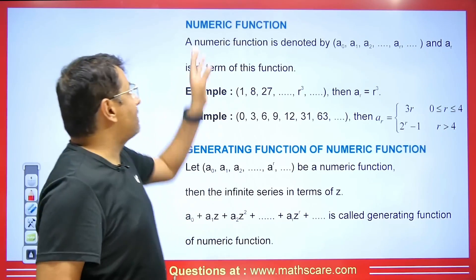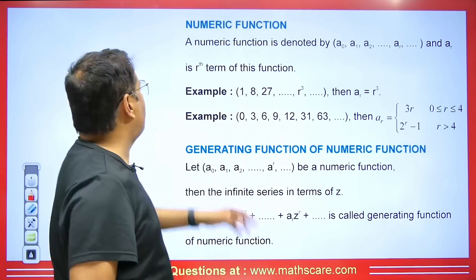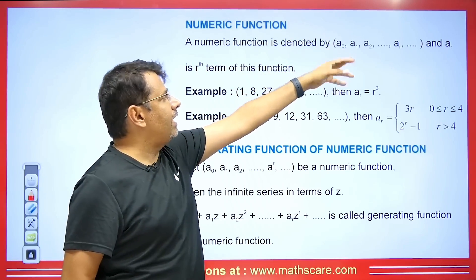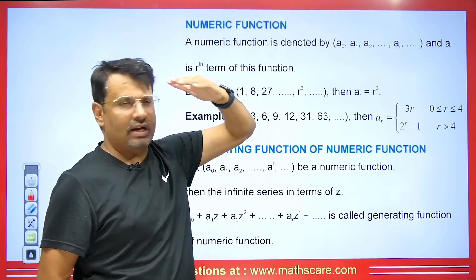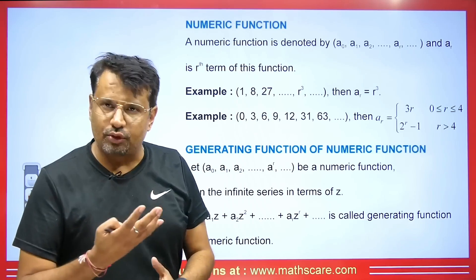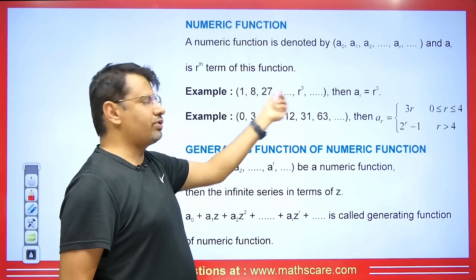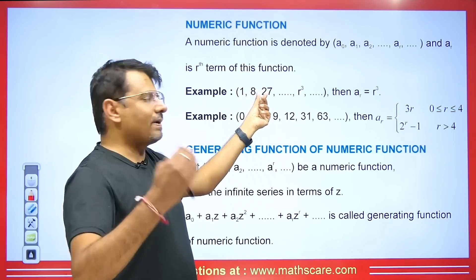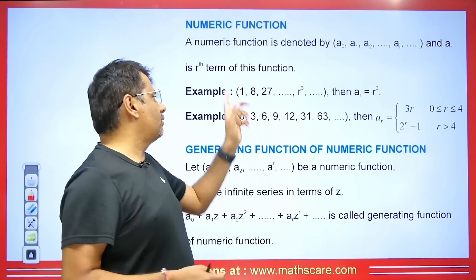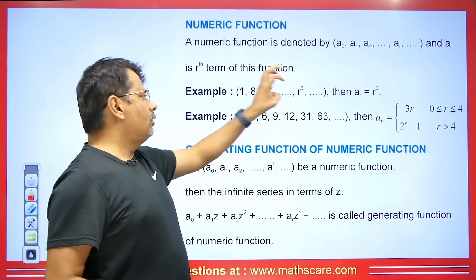Students, first we will talk about numeric functions. A numeric function is denoted by A0, A1, A2, ... AR going to infinity, where AR is its Rth term. For example, we have 1, 8, 27, and so on. You can see that this follows R to the power of 3. If we put R=1, we get 1; R=2, we get 8; R=3, we get 27.